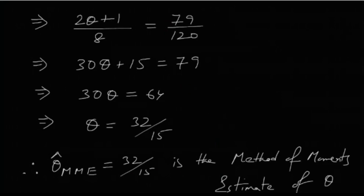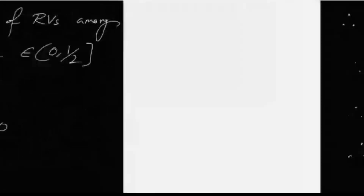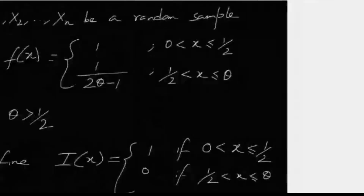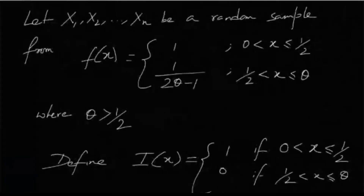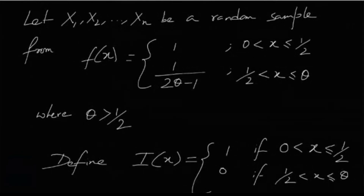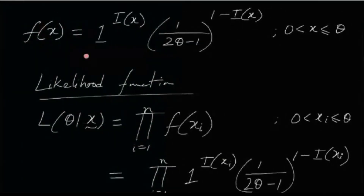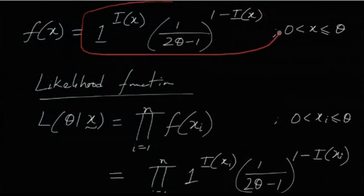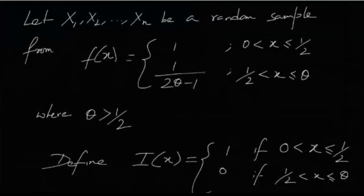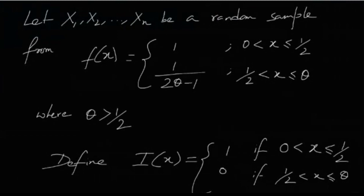So there you have it — the MLE is 1.4 (= 7/5) and the MME is 32/15. The only tricky part was that the PDF is piecewise defined, so we used the indicator function i(x) to combine the PDF into a single form. Do like, share, and subscribe to the channel for more exciting problems. See you next time.